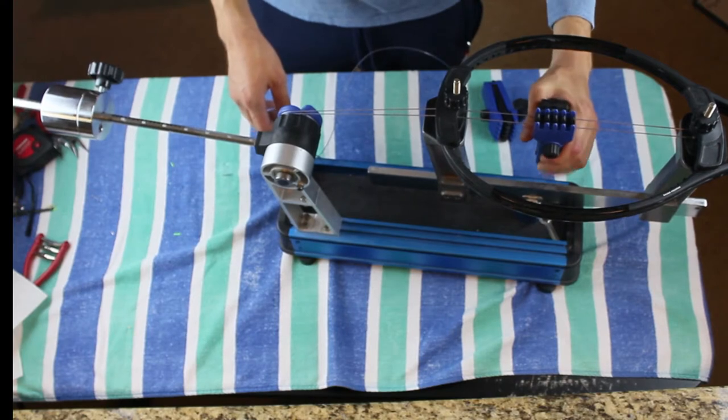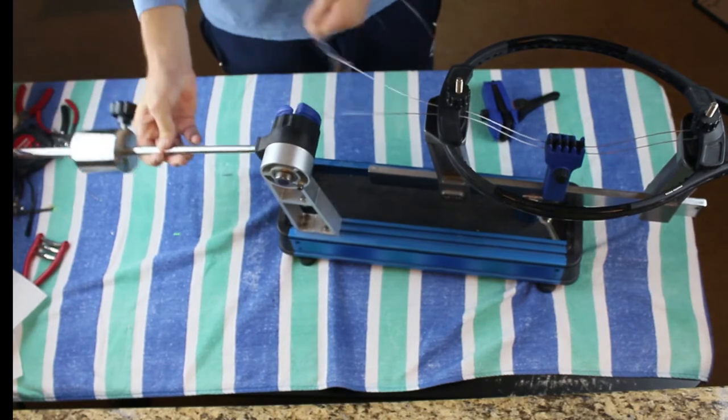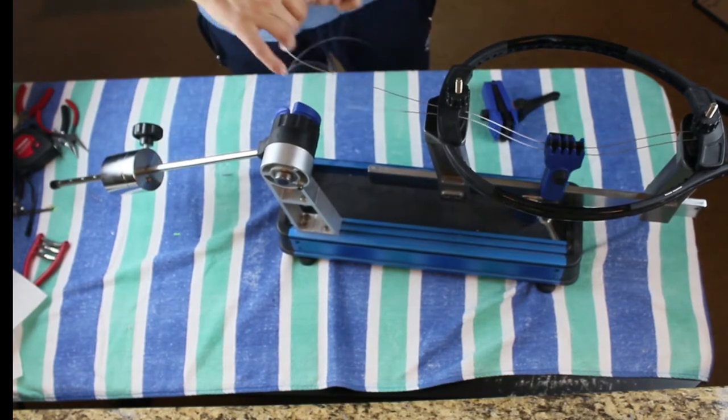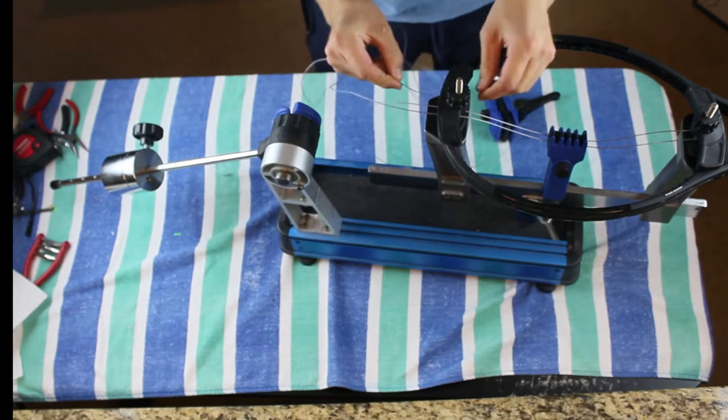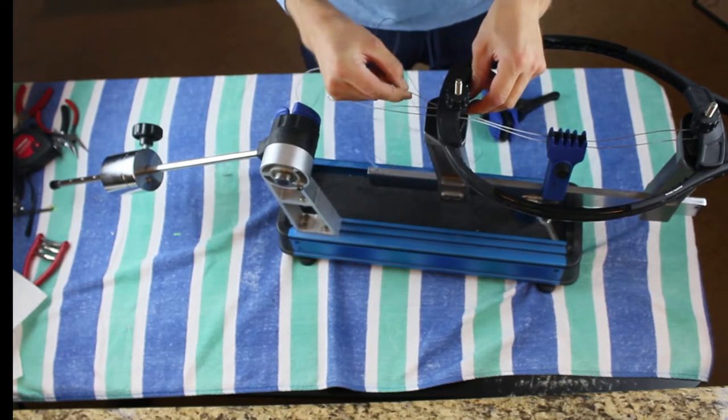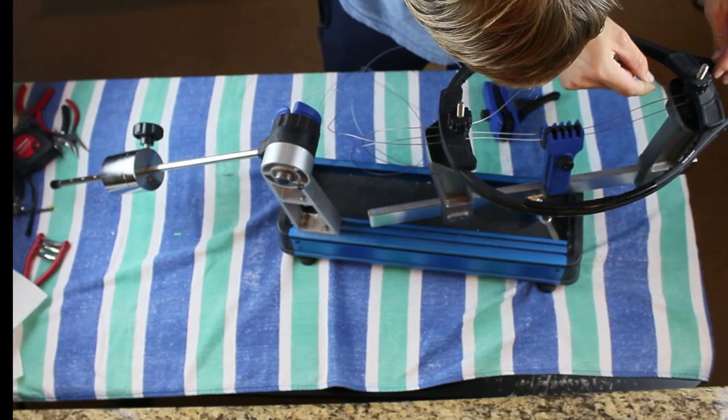Once we have that we're going to put our first floating clamp in the center of the strings, and then once we have that clamped we're actually going to release tension. It may seem silly because as soon as we release tension the clamp is going to fall because there is nothing holding it up, but it'll make sense after we tension that first string.